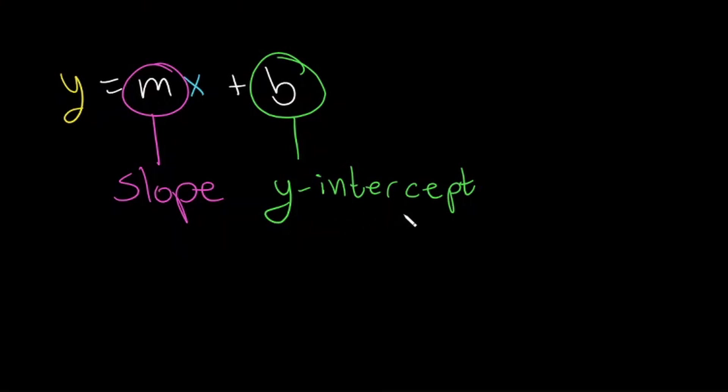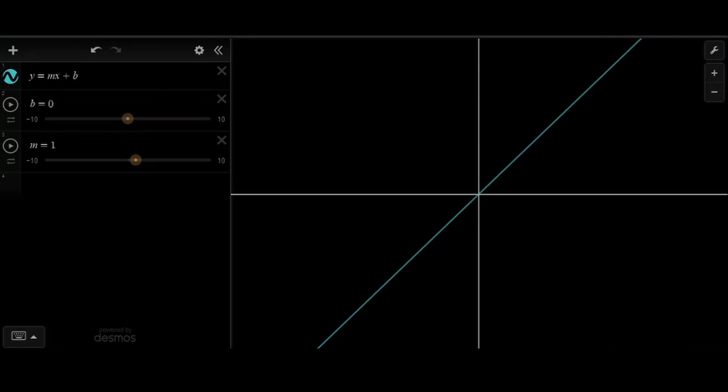The y-intercept is where the line intersects the y-axis. The x-intercept would be where it crosses the x-axis. So let's look at a graph so we can see how all of these different components work together. Here we have y equals mx plus b.